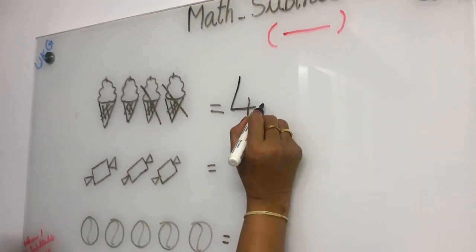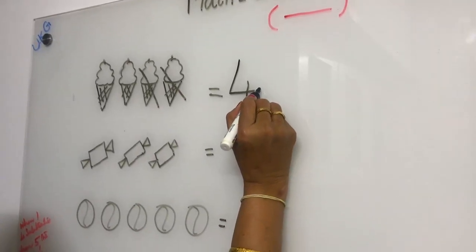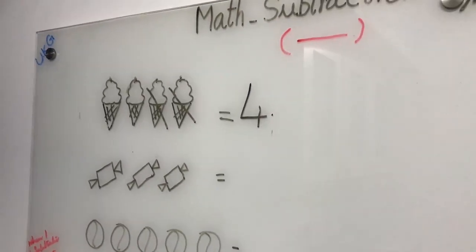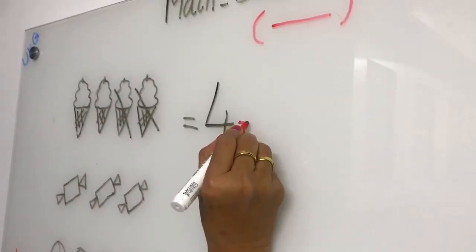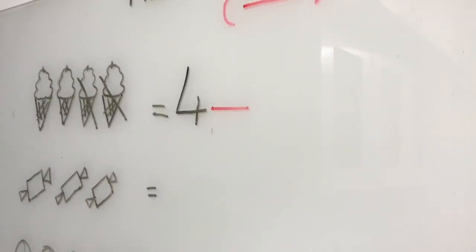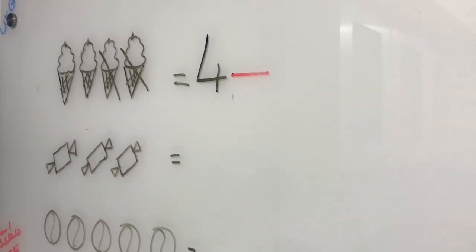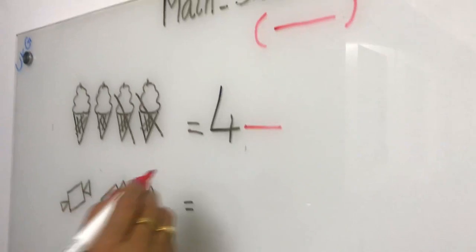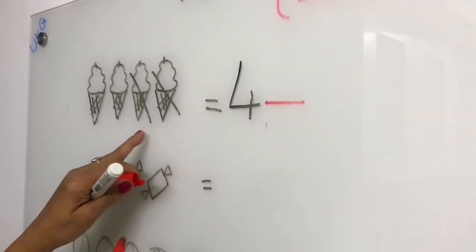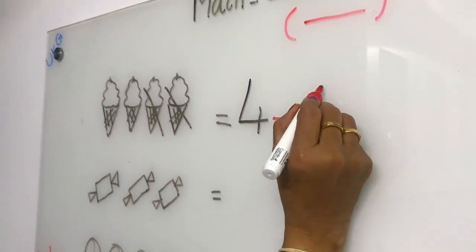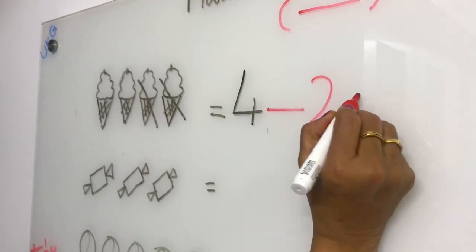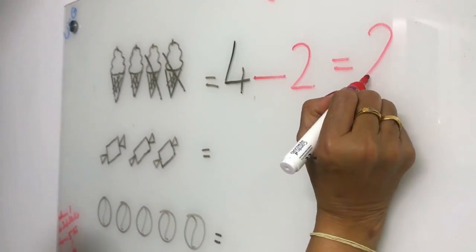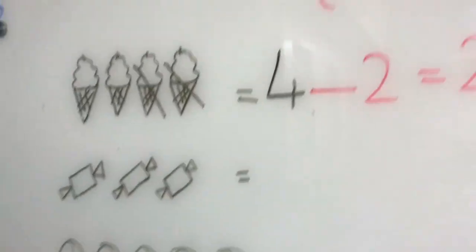See here: four, minus symbol. What is the symbol of subtraction? Minus. When two is subtracted from four, the answer is two. We have subtracted two from four — answer is two. Okay, understood, children?